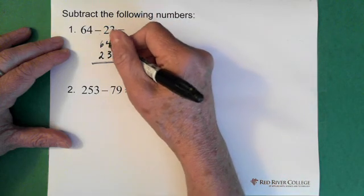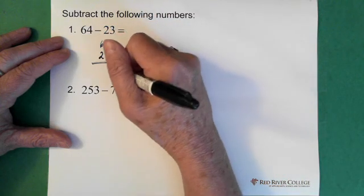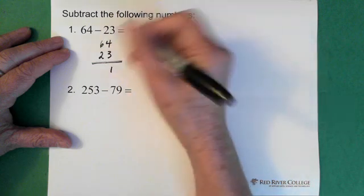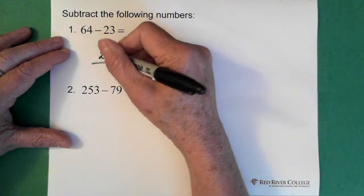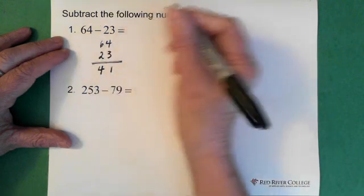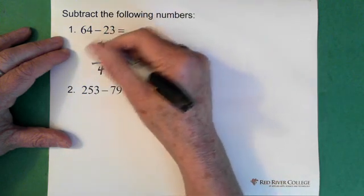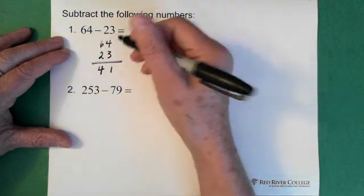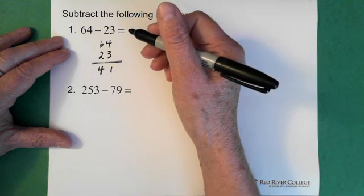So 4 minus 3 is 1. And 6 take away 2 gives us 4. So when the numbers on top are larger, it's pretty straightforward when we're subtracting.